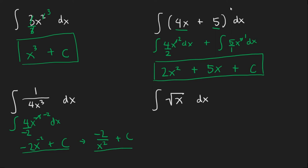For our last problem we have the anti-derivative of x squared, or excuse me the square root of x, which we can rewrite as the anti-derivative of x to the 1 half power. So we just do the same thing. Add 1 to 1 half and we get 3 halves.